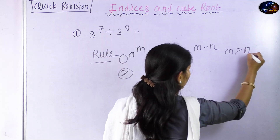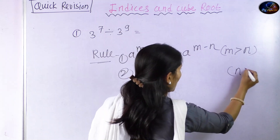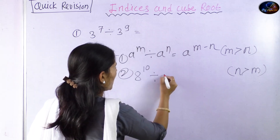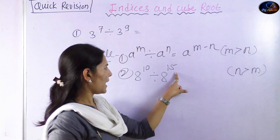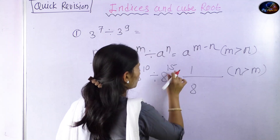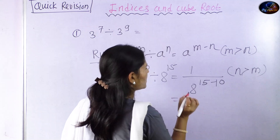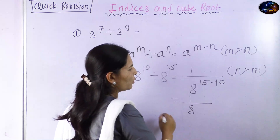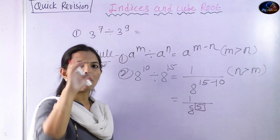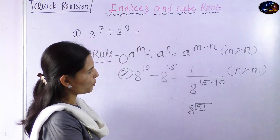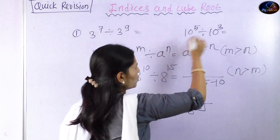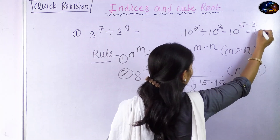When m is greater than n, we apply the rule directly. But when n is greater, for example 8 raised to 10 divided by 8 raised to 15, here n is 15 which is greater. So the result becomes 1 upon 8 raised to 5, which is the same as 8 raised to minus 5. For a simpler case: 10 raised to 5 divided by 10 raised to 3 equals 10 raised to 5 minus 3, which is 10 raised to 2.